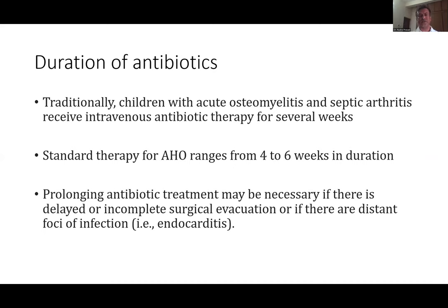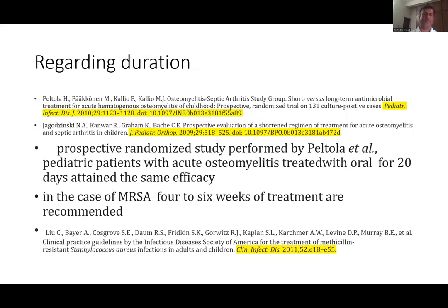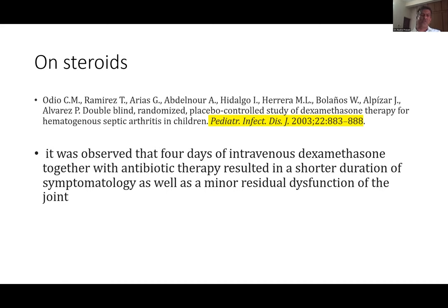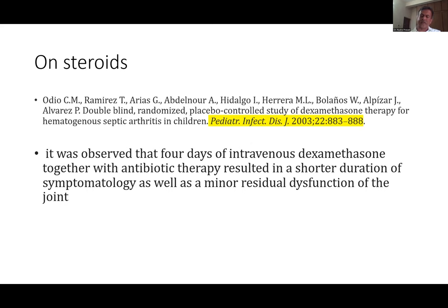What is the duration of antibiotics? Traditionally, acute osteomyelitis was treated with four to six weeks of intravenous antibiotics, which is not practically possible — especially in our country. Based on our experience and recent publications, we do short-course intravenous antibiotics until clinical improvement, then followed by oral antibiotics for about three to four weeks. We have done a prospective randomized study proving that short-term antibiotics are quite effective. Regarding steroids — I don't personally use them, but some use steroids to reduce the inflammatory load initially, and there are supportive studies for that.